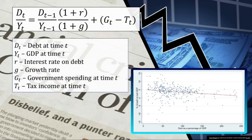A key question is: is it likely that we've estimated a causal relationship? That is, is it likely that increasing debt actually lowers growth? Let's think about this in terms of debt dynamics.